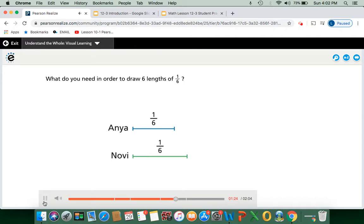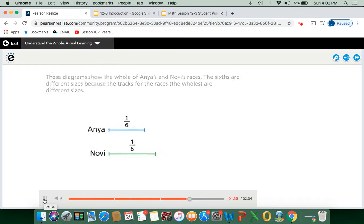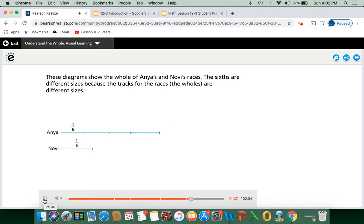What do you need in order to draw six lengths of one-sixth? You need six copies of each one-sixth length. Absolutely. So let's give it a try. These diagrams show the whole of Anya's and Novi's races. The sixths are different sizes because the tracks for the races, the wholes, are different sizes.